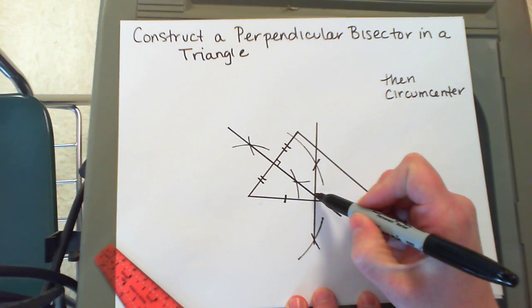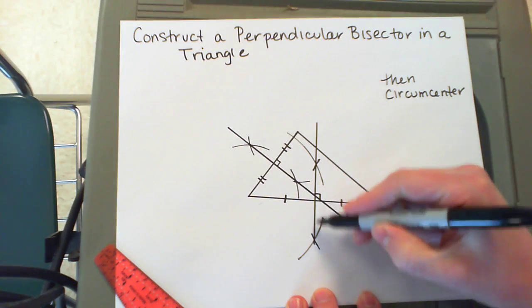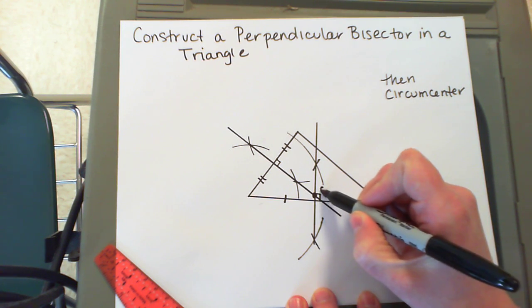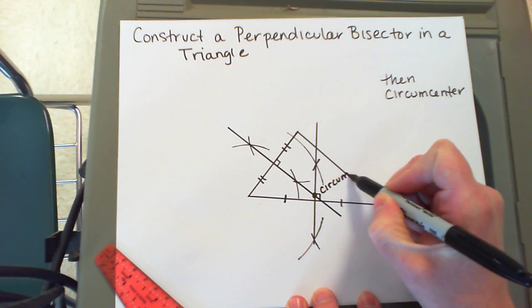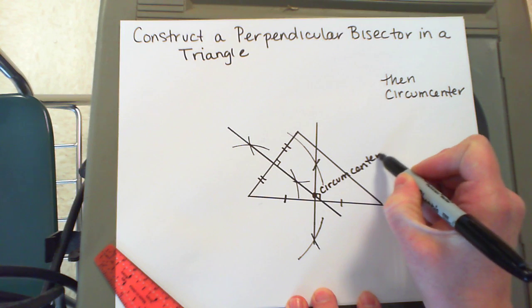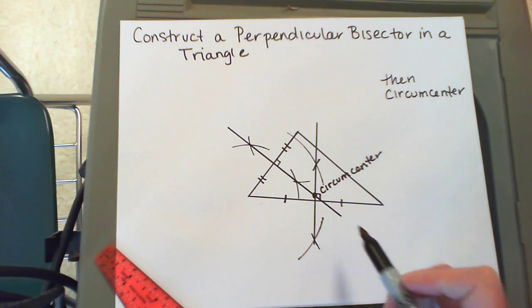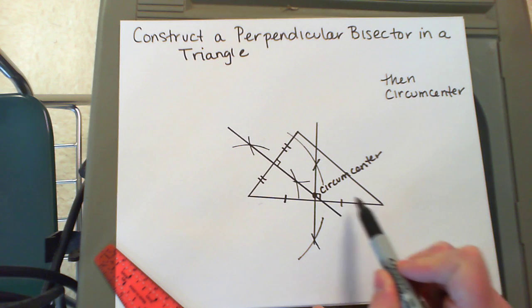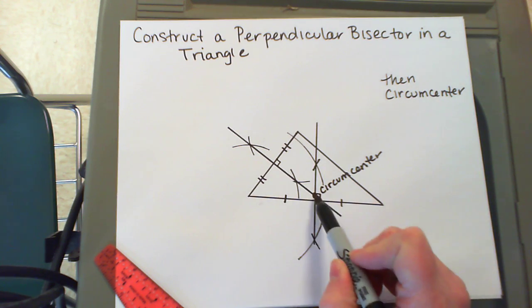Where these two perpendicular bisectors meet is called the circumcenter. Remember, the circumcenter is equidistant to each vertex of the triangle.